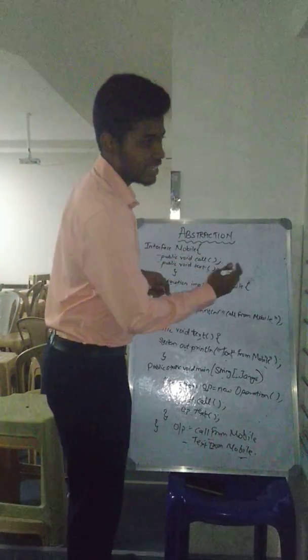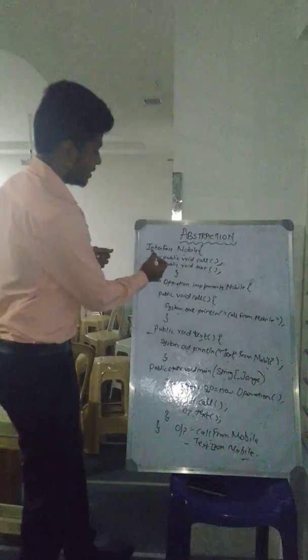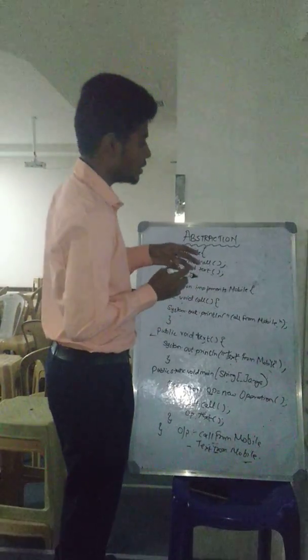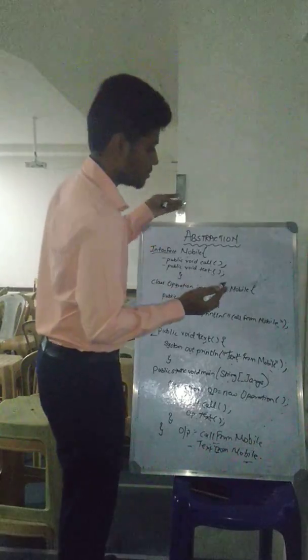We can create a class and declare it as an abstraction, or we use interface. Suppose we have an abstract method, so we need to declare a class as an abstraction.